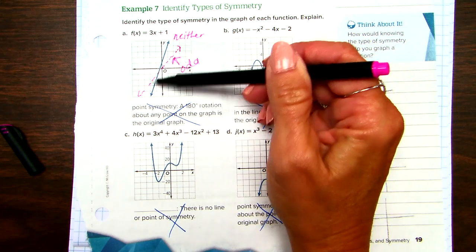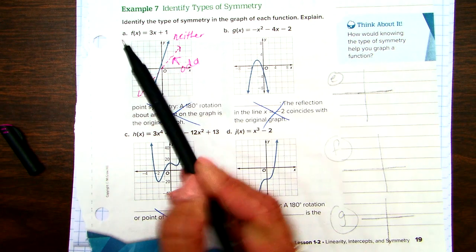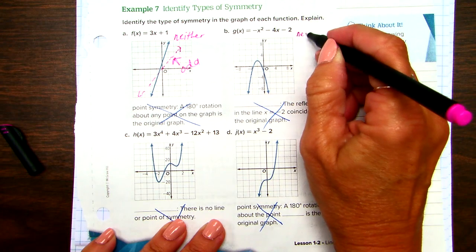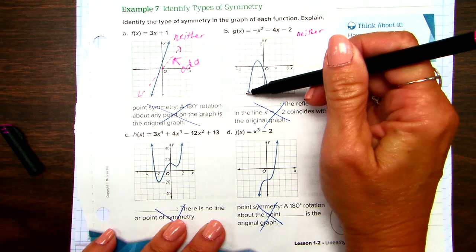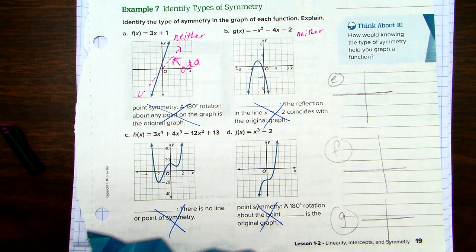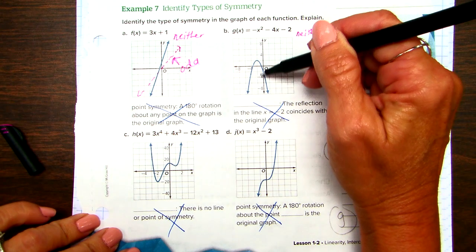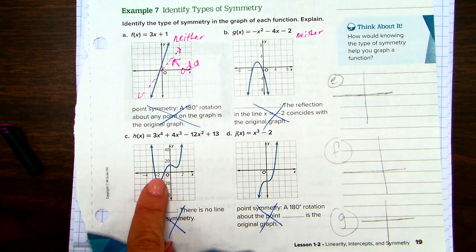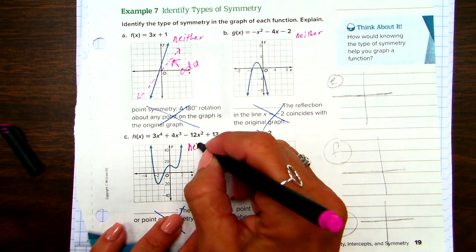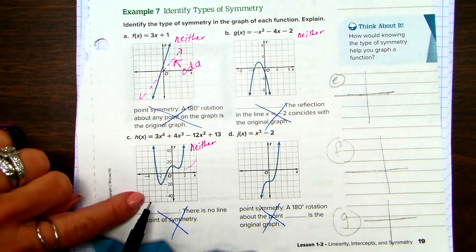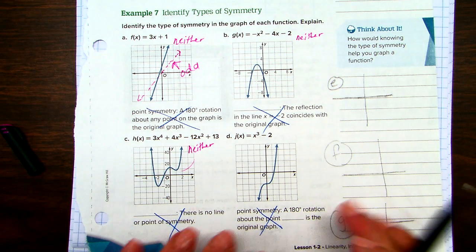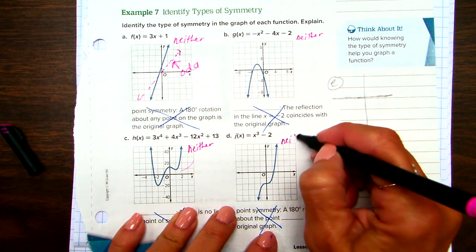So does that make sense, guys? The way it was written here is neither kind of symmetry. It doesn't split, it's not split evenly by the y-axis or by the origin. Look at B. This is another one that's neither. Look at this. This is a neither as well. It's a symmetrical graph. Parabolas, that's what that is, is symmetrical. But specifically, is the y-axis its line of symmetry? And the answer is no. So that's a neither.